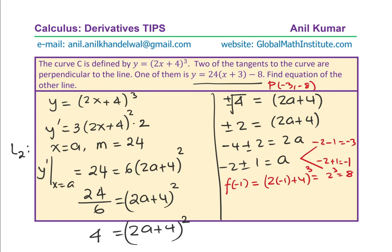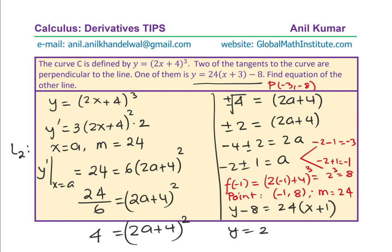At x equals minus 1, the value of the function is 2(minus 1) + 4 whole cube equals 2 cubed equals 8. So the other point is (minus 1, 8) and the gradient m is 24. We can now write the equation: y minus 8 equals 24 times (x minus (minus 1)), which gives y equals 24(x + 1) plus 8. This equation can be written in slope-intercept form, standard form, or as shown, matching the style of the given tangent.